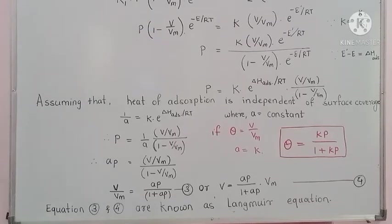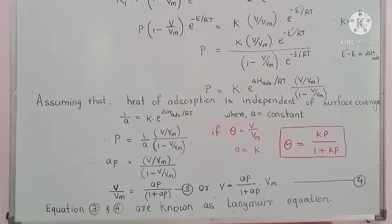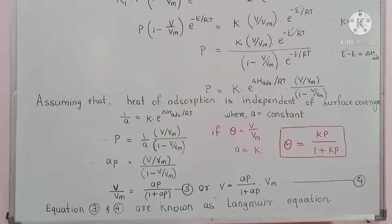The Langmuir equation is applicable only at low pressure. There are some limitations. The first assumption holds only at low pressure — if pressure is increased, the assumption that gas molecules behave ideally breaks down. The second assumption also breaks down when the pressure of the gas is increased.